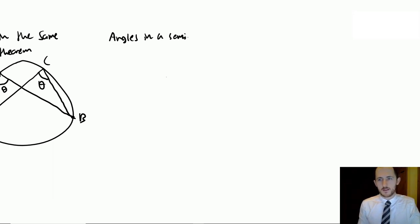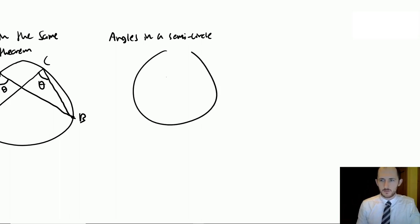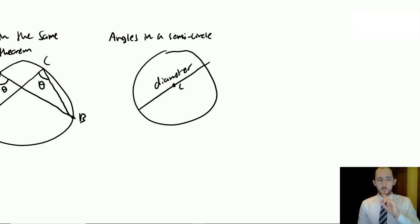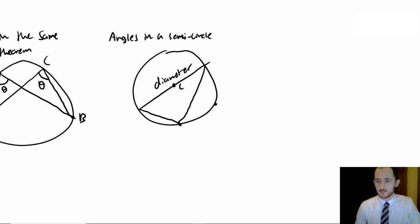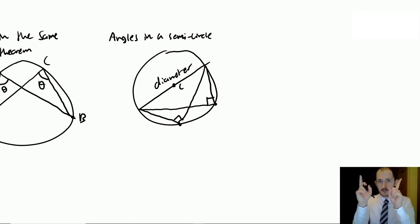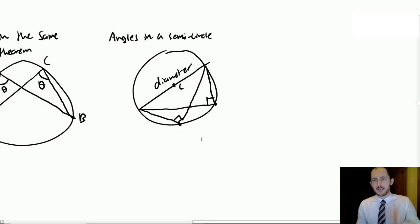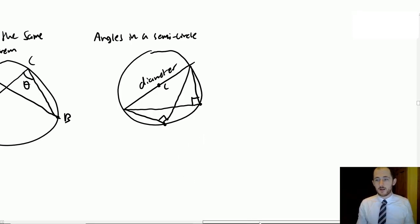Angles in a semicircle: this very seldomly comes up, but if you have a circle and the diameter, and you make an angle from the two ends of the diameter to any point on the circumference, that angle will always be a right angle. No matter where you place the point along the circumference, it's always 90 degrees.